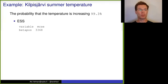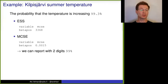We can also compute the probability that the temperature is increasing. We would get 99.3 percentage ESS shown here. And if we then look at the Monte Carlo standard error, we see that actually that last digit is not so accurate. And we might actually then go again just reporting with two digits and say that it's 99 percent probability that the temperature is increasing.